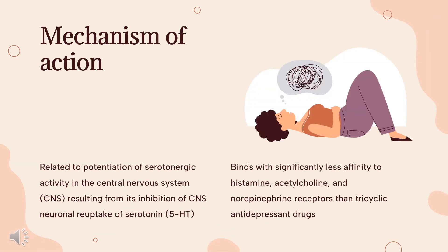Mechanism of Action: The exact mechanism of action of fluvoxamine has not been fully determined, but appears to be linked to its inhibition of CNS neuronal uptake of serotonin. Fluvoxamine blocks the reuptake of serotonin at the serotonin reuptake pump of the neuronal membrane, enhancing the actions of serotonin on 5-HT1A autoreceptors. Studies have demonstrated that fluvoxamine has virtually no affinity for alpha-1 or alpha-2-adrenergic, beta-adrenergic, muscarinic, dopamine D2, histamine H1, GABA/benzodiazepine, opiate, 5-HT1, or 5-HT2 receptors, despite having an affinity for sigma-1 receptors.